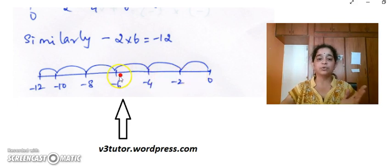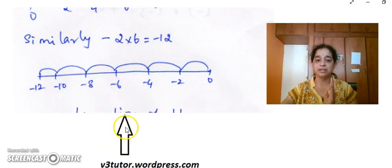That means we are going on the opposite side of 0: minus 2, minus 4, minus 6, minus 8, minus 10, and minus 12. So when we add minus 2 six times, we get minus 12.